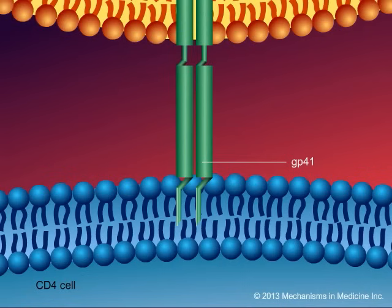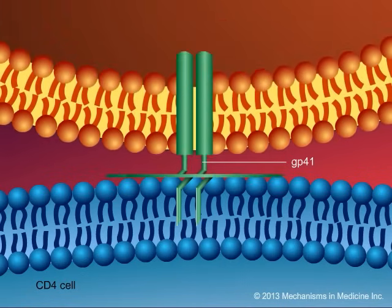The transformational change can take place within GP41 as a precursor event in this fusion process. It is essential to point out that each of GP120, the CD4 receptor, the CCR5 or CXCR4 receptor, and GP41 are all essential elements in the process of viral entry into target cells.